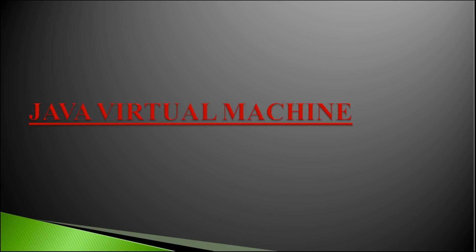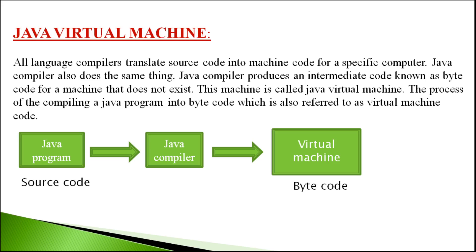Coming to Java Virtual Machine. In any programming language, the compiler translates source code into machine code. But in Java, the compiler translates the source code into byte code. That byte code is stored in the Java Virtual Machine.